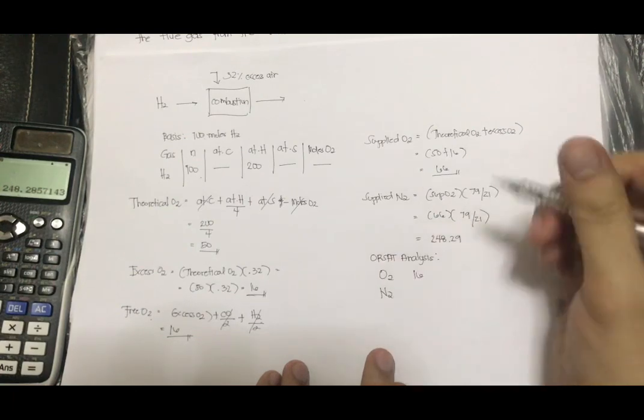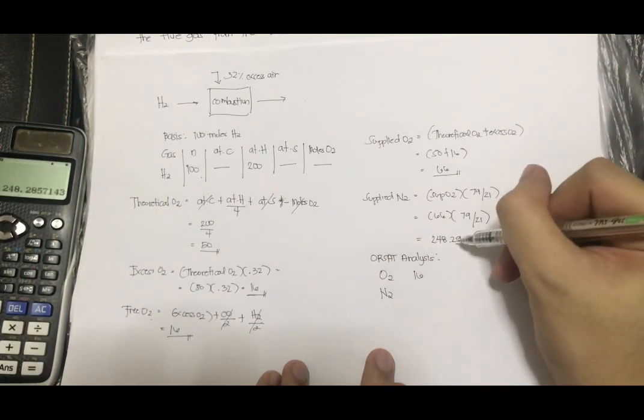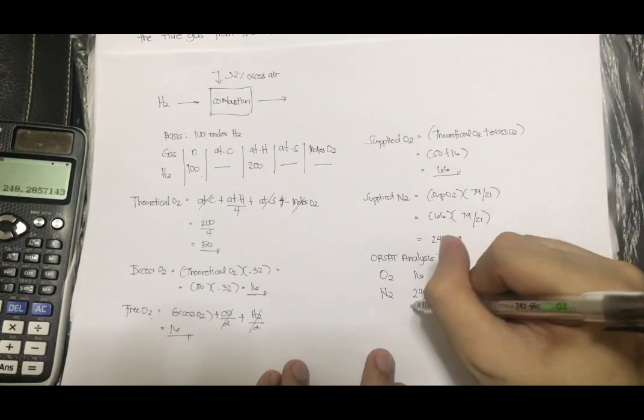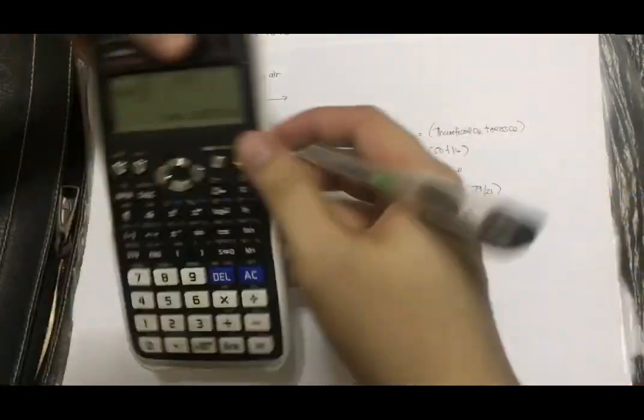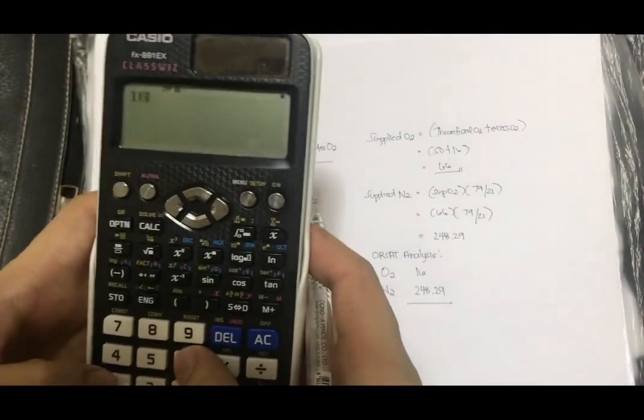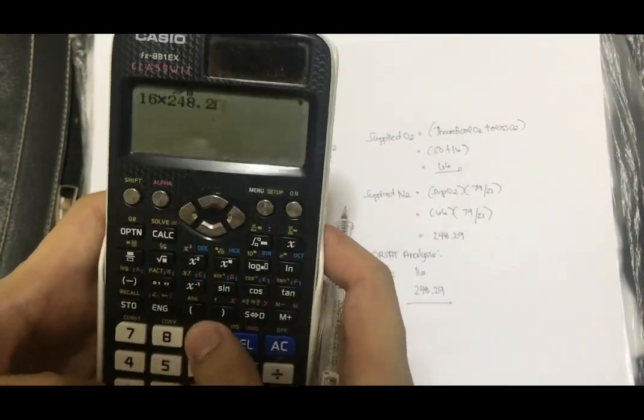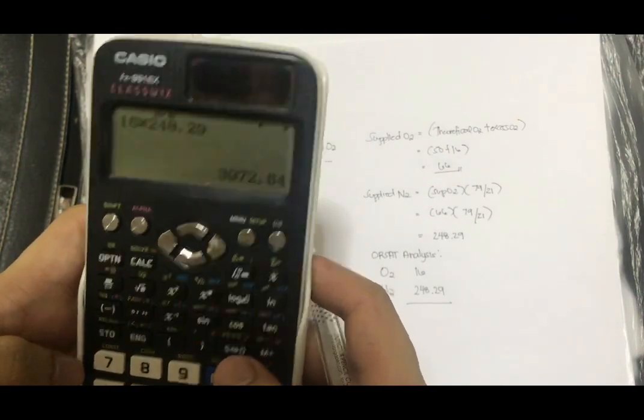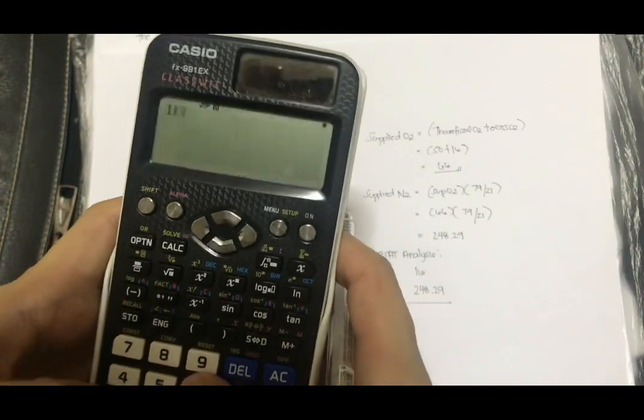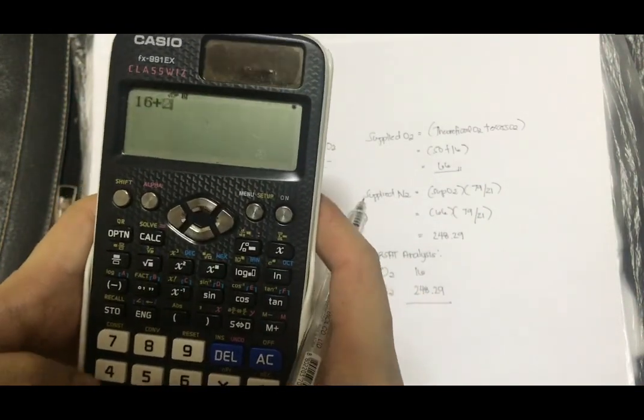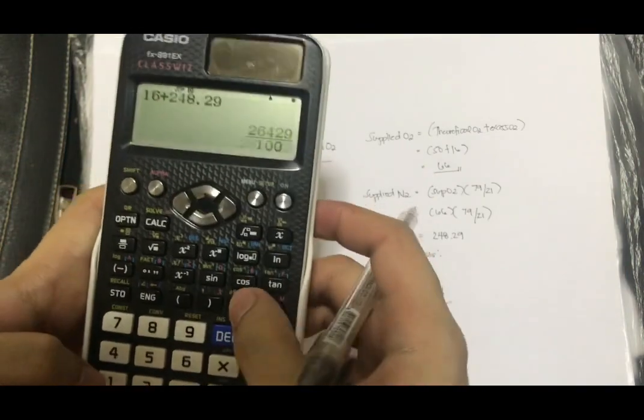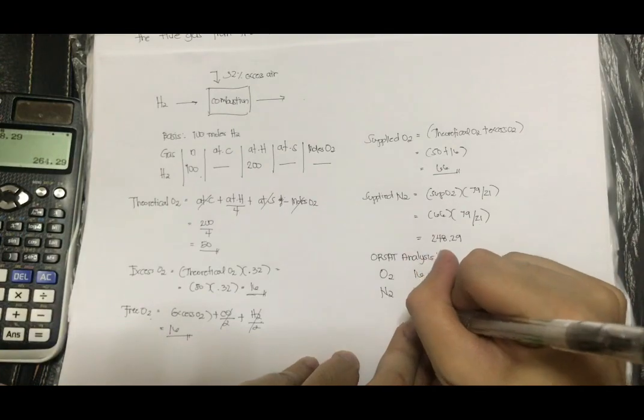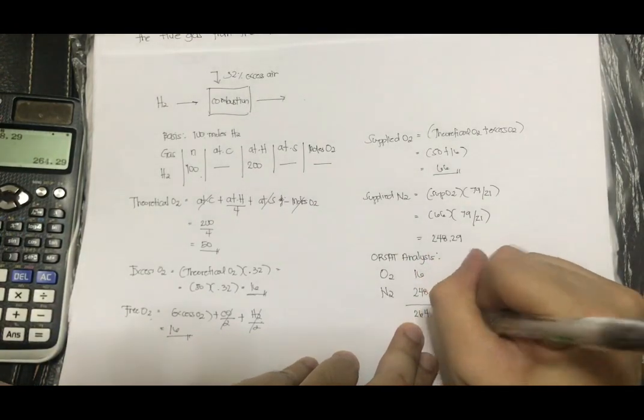And then the N2, the N2 we got is 248.29. So let's add this. 16 plus 248.29. So that's 264.29.